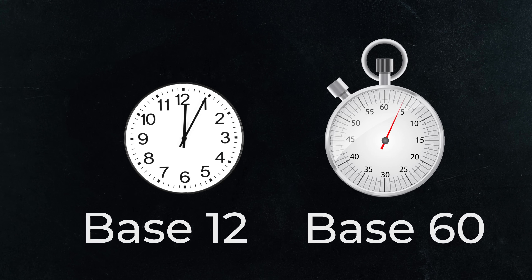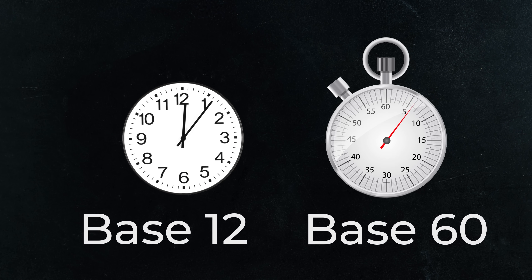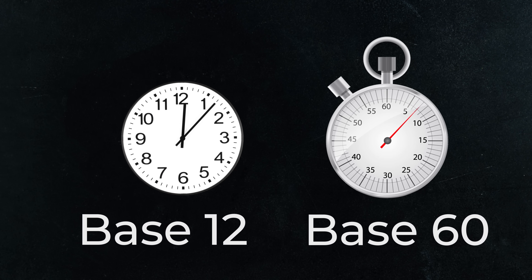Our timekeeping is base 12 and base 60. What happens when you get to 12? You start over again. And the same thing when you get to 60. Teaching Chuck how to count in base 2 without paper — it's not going to happen.